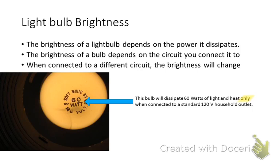So the brightness of a light bulb depends on the power that it dissipates. The more joules per second power dissipates, the brighter the light bulb is. The brightness of a light bulb depends on the circuit that you connect it to. So if you take a light bulb and you connect it to one circuit and get one brightness, if you move it to a different circuit, you're going to get a different brightness. When you look on there and it's like a 60 watt light bulb, that's only when it's connected to your standard 120 volt household outlet. If you were to connect it to a different circuit, you're going to get a different amount of light from your light bulb.